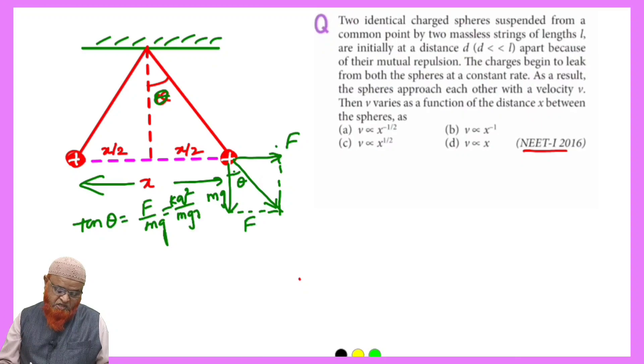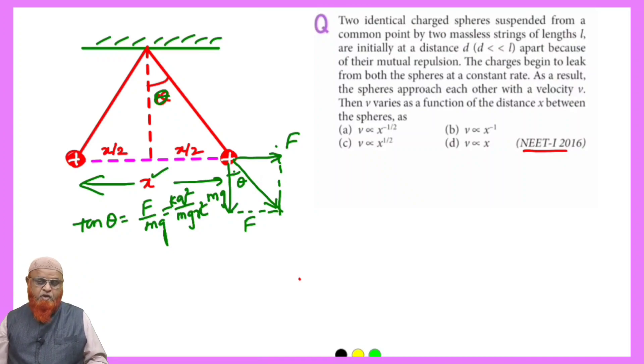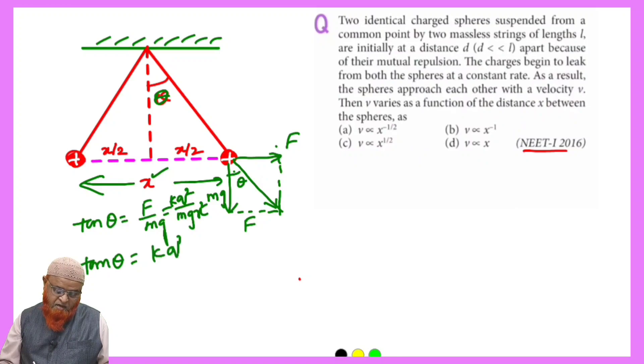Because the distance here is considered as x², we got the value of tan theta. So what is tan theta actually? Tan theta is nothing but kq² by mgx².